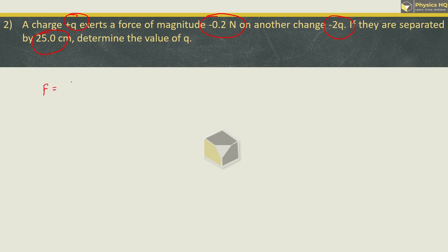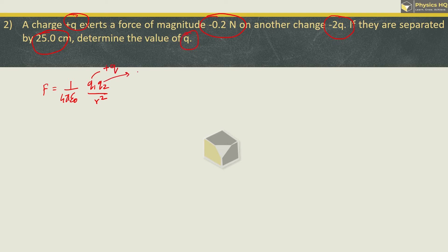Once again, same formula. F is equal to 1 upon 4πε₀ times Q1 Q2 upon R². Here we are supposed to find the value of Q. So Q1 is nothing but +Q, and the second charge is minus 2Q.